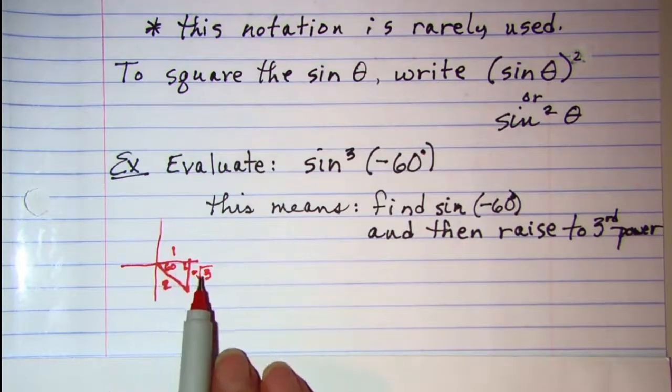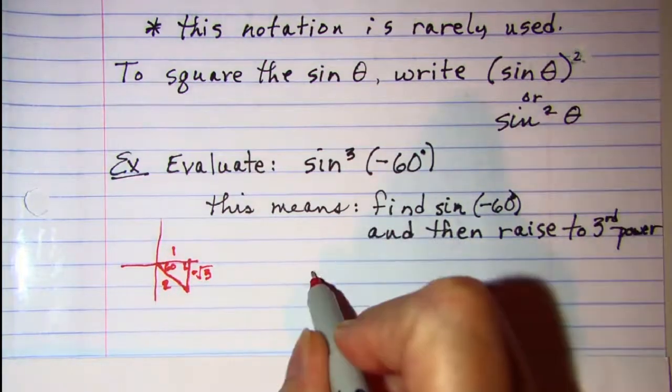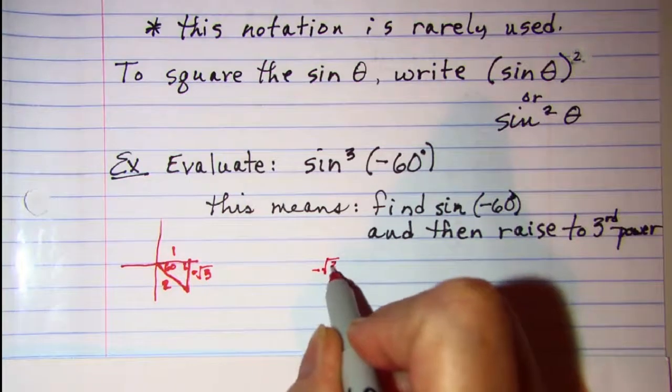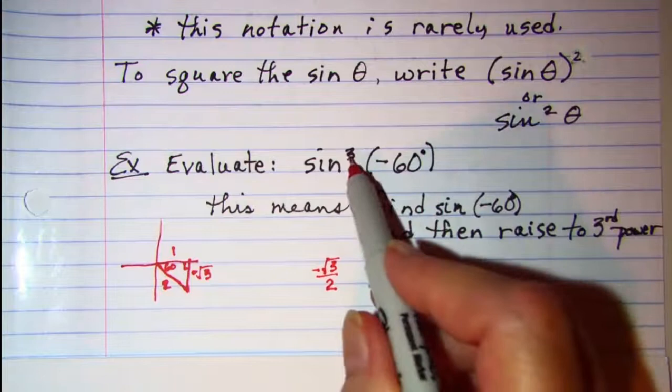The sine is defined as opposite over hypotenuse, so negative √3 over 2. Now that needs to get cubed.